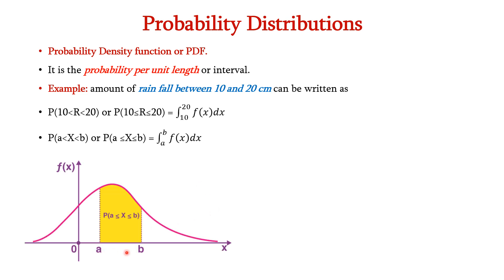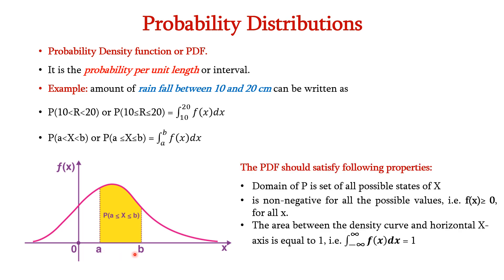Graphically, the PDF can be expressed as a continuous curve over the interval. The PDF must satisfy the following properties: the domain of p is the set of all possible states of X; f(x) must be non-negative, that is f(x) ≥ 0 for all x; and the area between the density curve and the horizontal x-axis must equal 1, that is the integral of f(x) dx equals 1.